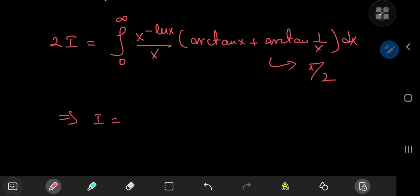So this implies that i equals, multiplying the equation by 1 half, of course, i equals 1 half of the integral from 0 to infinity of... wait, we have this pi by 2 term outside, of x to the negative log x divided by x dx.